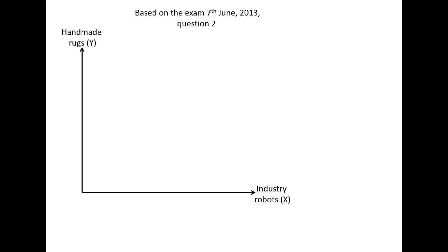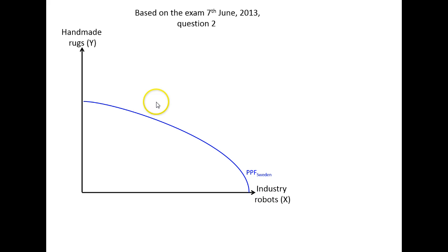Sweden, which is a rather small but rich country, would be capital-abundant. Therefore the production probability frontier in Sweden would be that we could produce relatively much of the capital-intensive good, industry robots, but not that much of the labor-intensive good, handmade rugs.